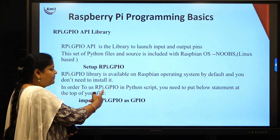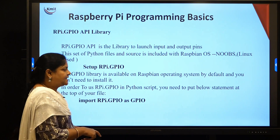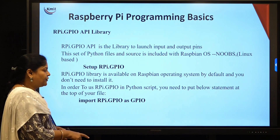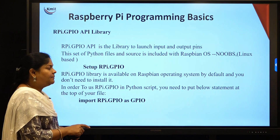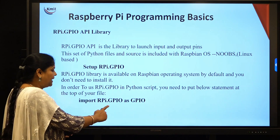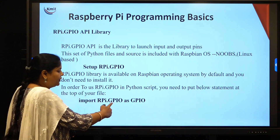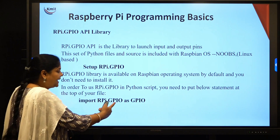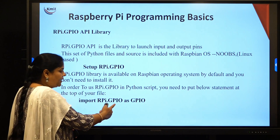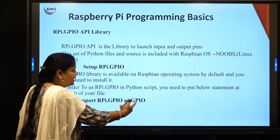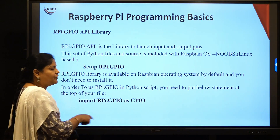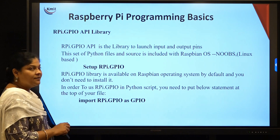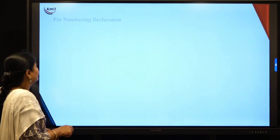To use rpi.gpio in a Python script, you need to add the import statement at the top of your file. In every program, the first line you write is: import rpi.gpio as GPIO. Here you are importing the rpi.gpio library and referencing it as GPIO throughout your program.